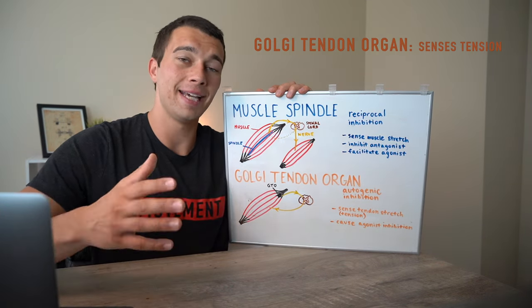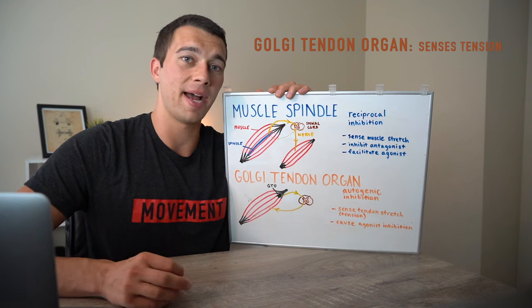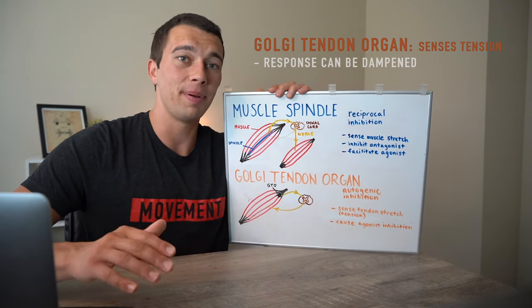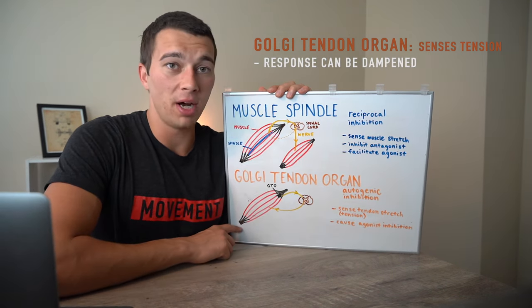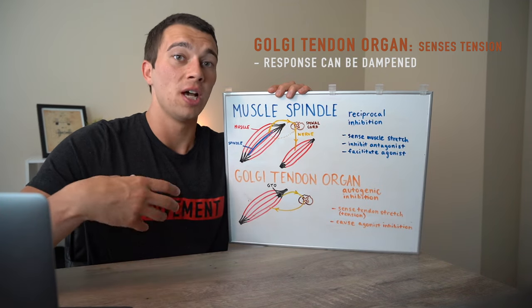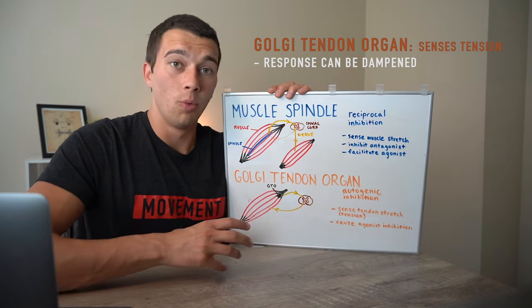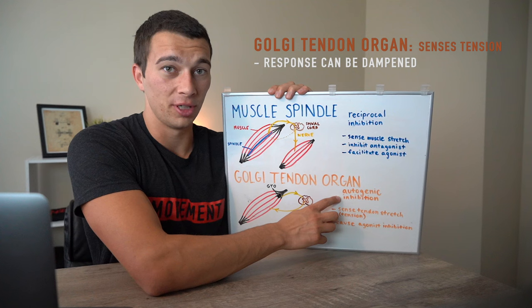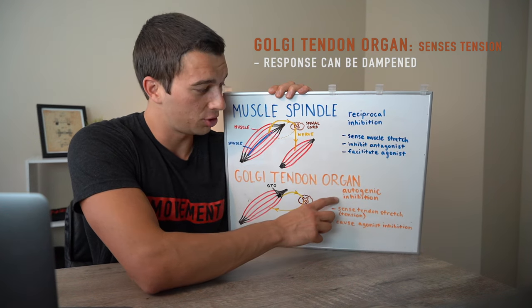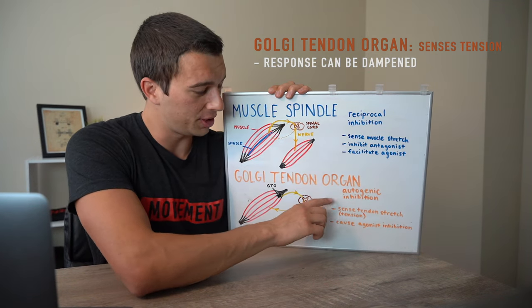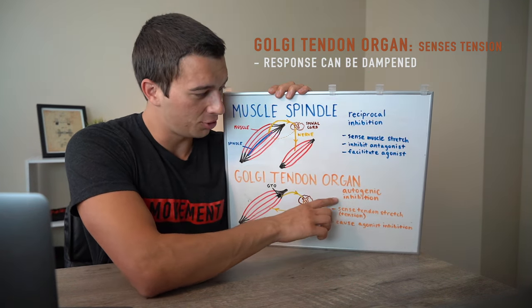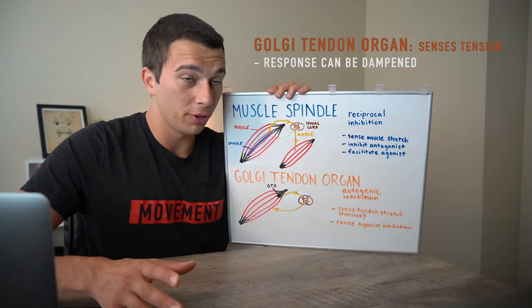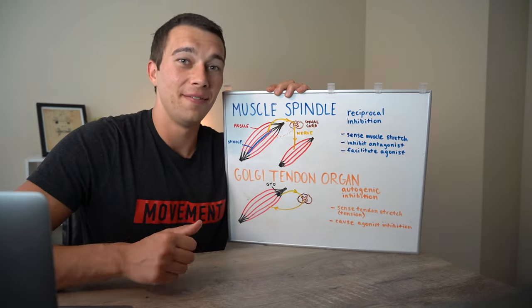One training implication of the Golgi tendon organ is that if we are chronically working at really high loads — one to three rep max, 85-plus percent of one-rep max — we can actually dampen the Golgi tendon organ response and train our muscles to work at these high thresholds without as much autogenic inhibition. Over time we can dampen the GTO response to allow us to lift heavier loads if we practice that consistently.